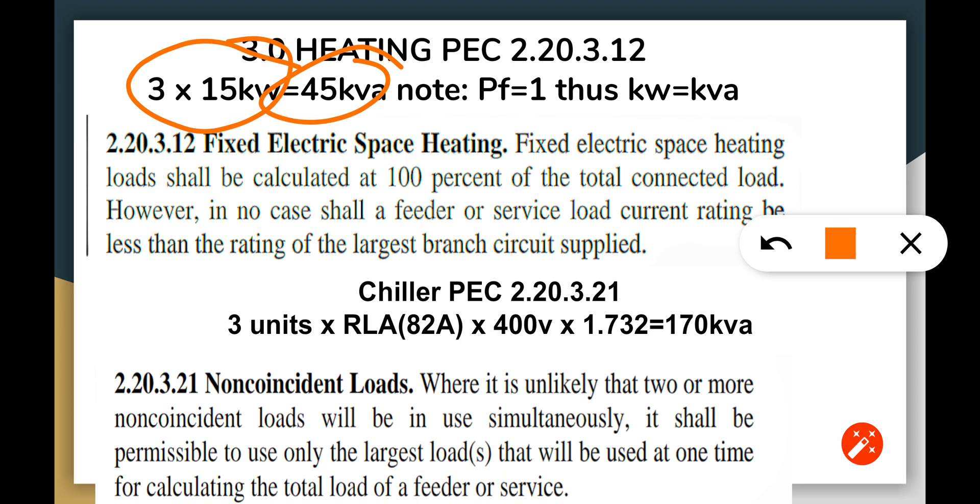We have the chillers here. We have two units of chillers with rated load amperes of 82 amperes times three phase 400 volts times 1.73, so you should get 175 kVA. These are non-coincident loads because they are not activating at the same time. When the heating is provided there's no chiller, when cooling is provided there's no heating. That's what we call non-coincidental loads.